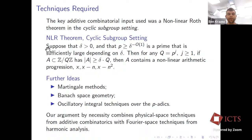We also needed to combine this with martingale methods, further Banach space geometry methods, and oscillatory integral techniques over the p-adics — which is quite surprising. We really needed to understand the distribution of polynomials over the p-adics. This is almost suggested by the cyclic subgroup statement where Q must be a very large power of p. What was interesting is we had to combine Fourier-analytic arguments with physical-space arguments, different from Bourgain's approach where he did everything in Fourier space.